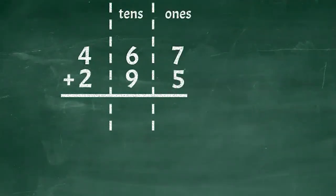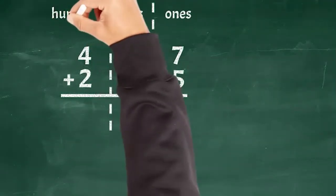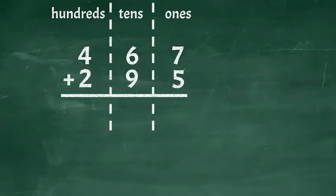Next I make sure the tens place of the top number is right above the tens place of the bottom number. Finally I make sure the hundreds place of the top number is right above the hundreds place of the bottom number.